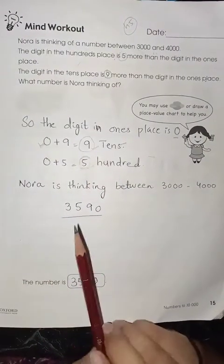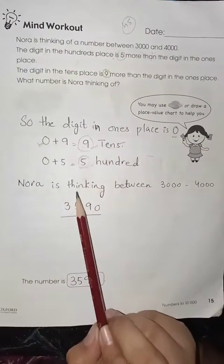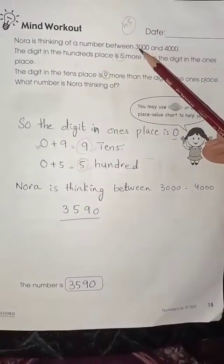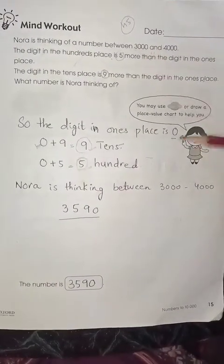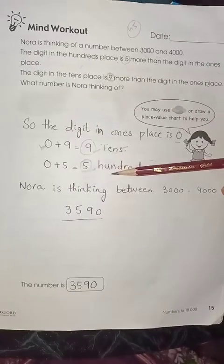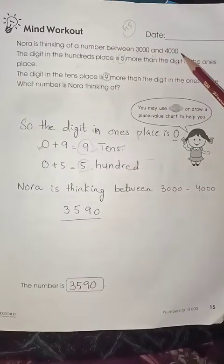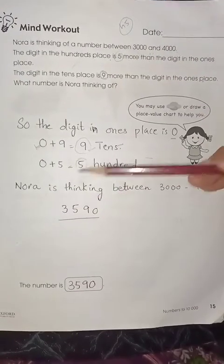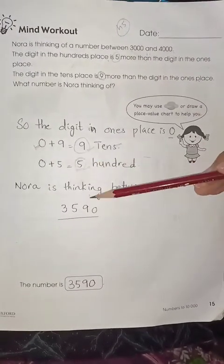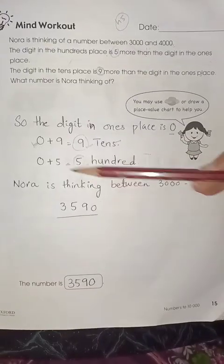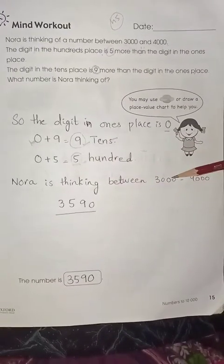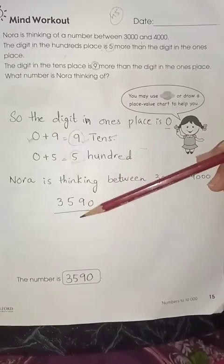Now the remaining number is thousand. There are four digits and we have found ones, tens, and hundred. So the thousand is 3 because it is between 4000 and 3000. So the number is 3590.